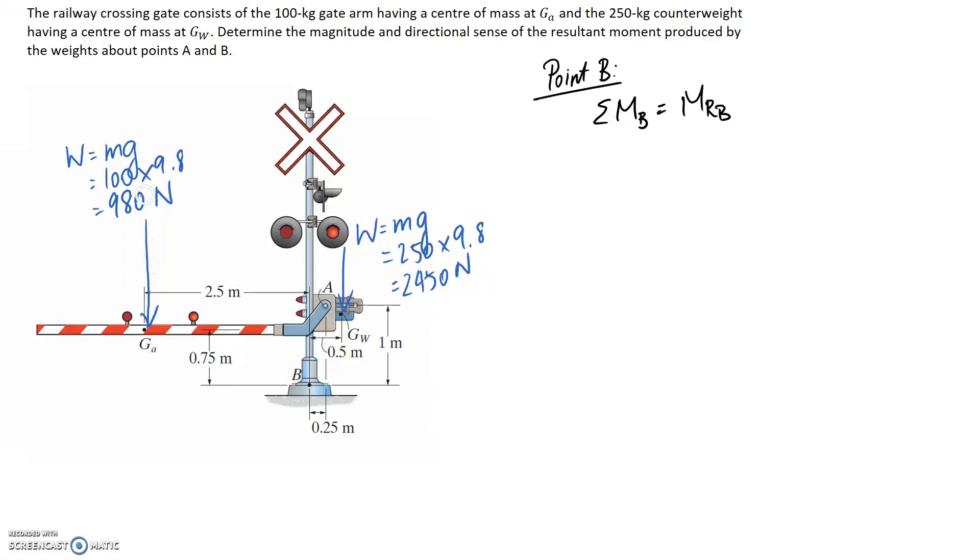If we start with this 980 newton force, we know it's got a force of 980 and we need to multiply it by the distance back to where we're looking at. So if we're looking at point B here, the perpendicular distance is going to be this 2.5 metres.